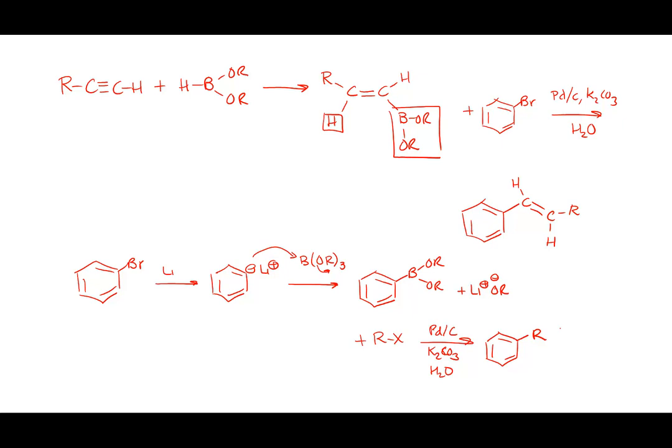In modern synthesis, when making really complicated molecules, chemists often make one complex part — with multiple functional groups and stereocenters — and another person makes a different part, then they use reactions like Suzuki or Heck coupling to join those pieces. A lot of complicated drug molecules are broken into manageable parts and coupled together this way.